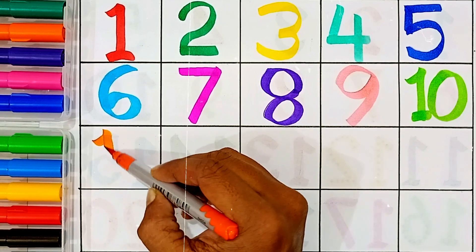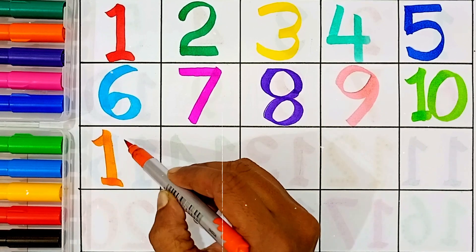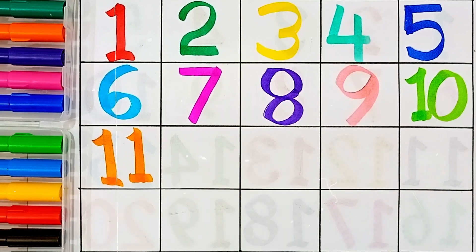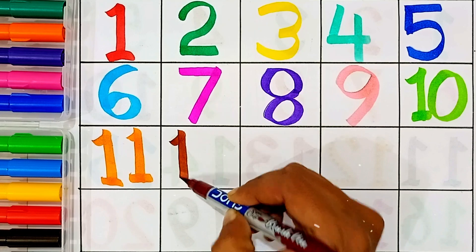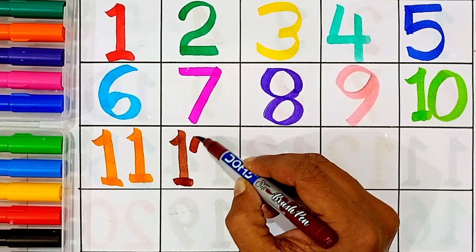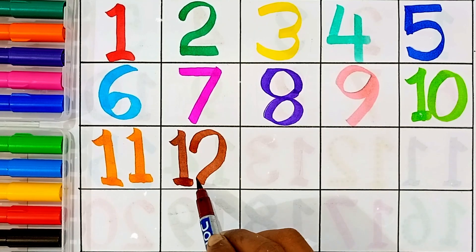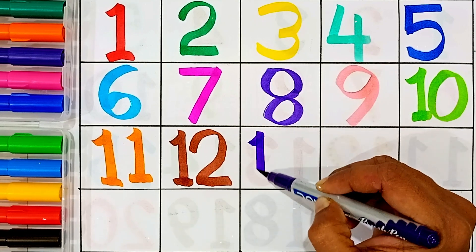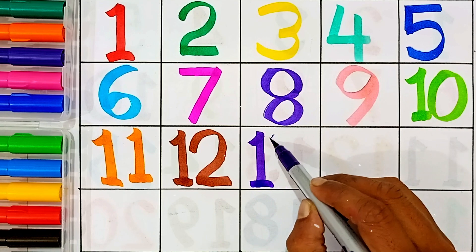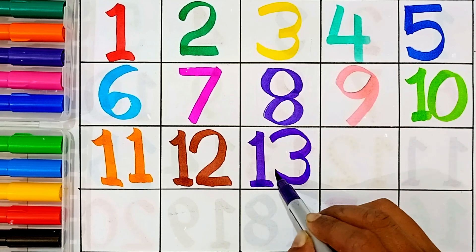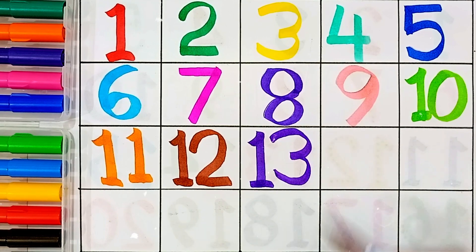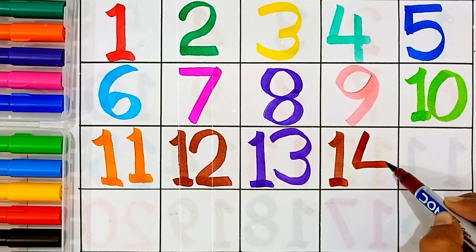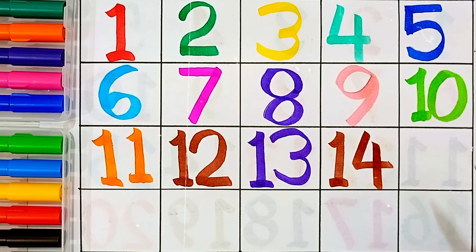11 — 1 and 1, this number name is 11. 12 — 1 and 2, this number name is 12. 13 — 1 and 3, this number name is 13. 14.